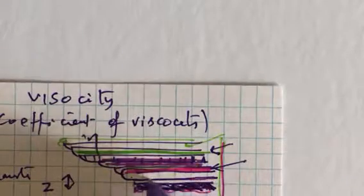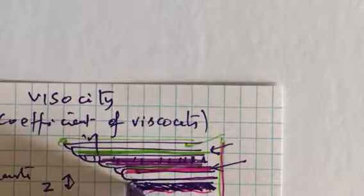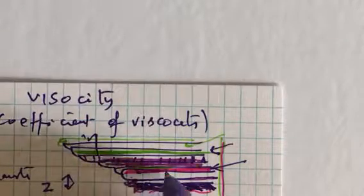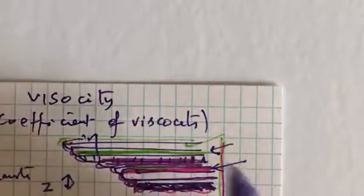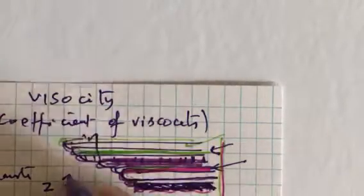Whereas the top layer over the bottom layer tries to forge ahead, and the next layer tries to forge a little more ahead, ahead, ahead. And now if the distance between these layers is Z.